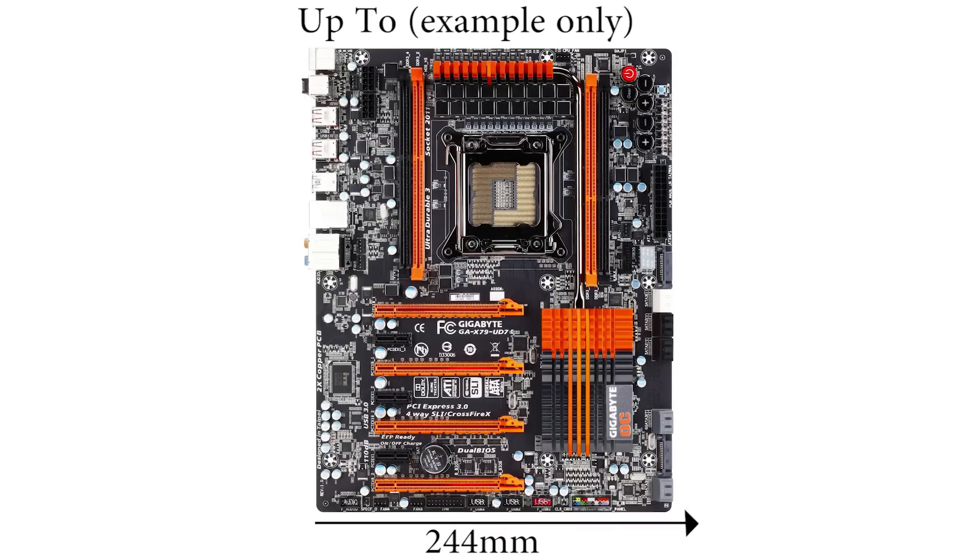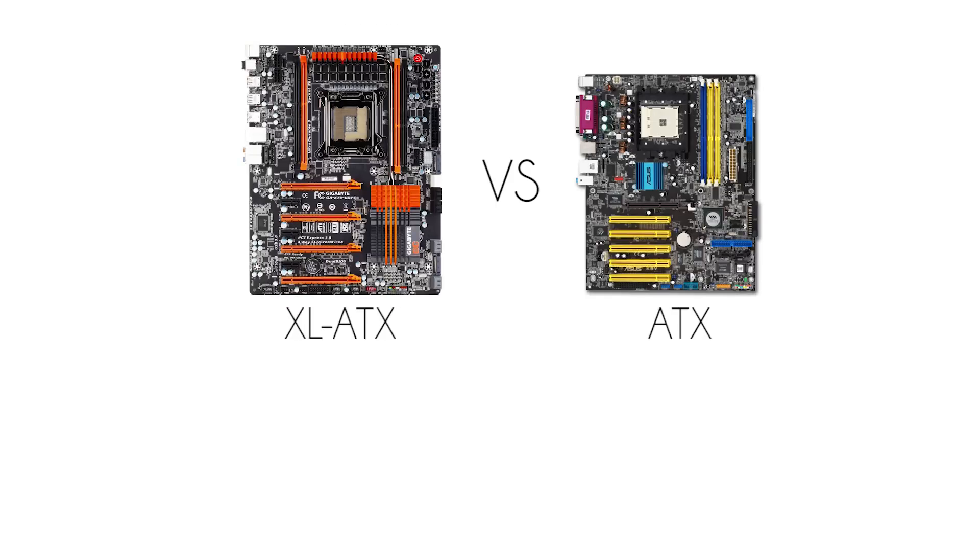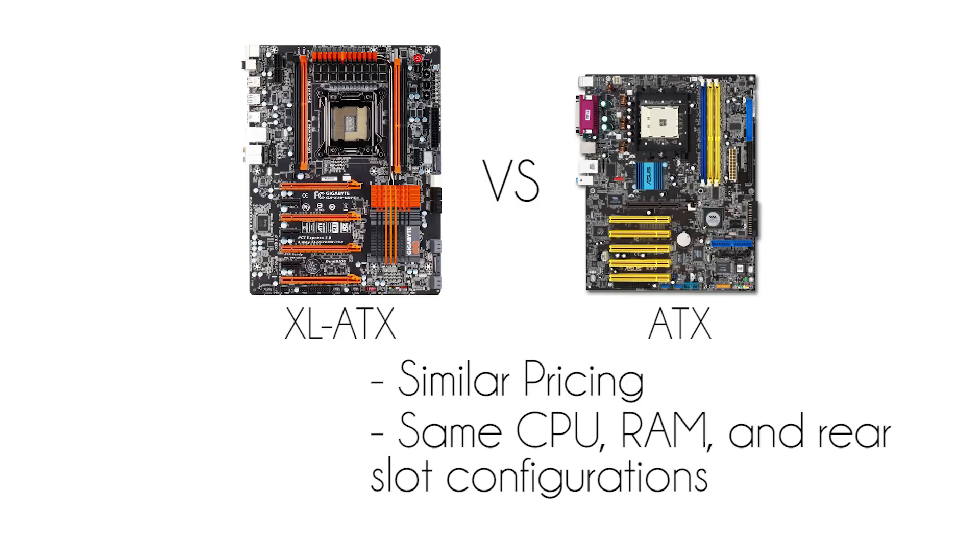XL-ATX motherboards are a bit of an oddity. They don't even have a standard size, but they're usually 244mm wide, and the size increase actually comes in the form of additional height. It's right in the name, but it's more like an extra-large ATX motherboard than anything else. Pricing-wise, they are similar to premium ATX boards, and when it comes to performance, they have the same CPU and RAM and rear slot configurations as ATX boards. Which is weird.